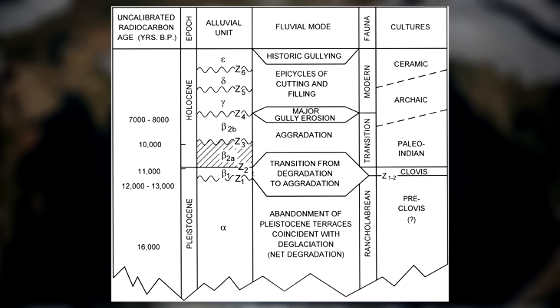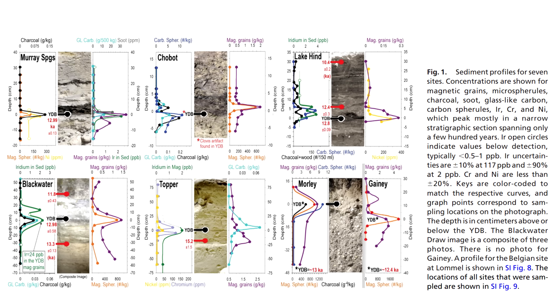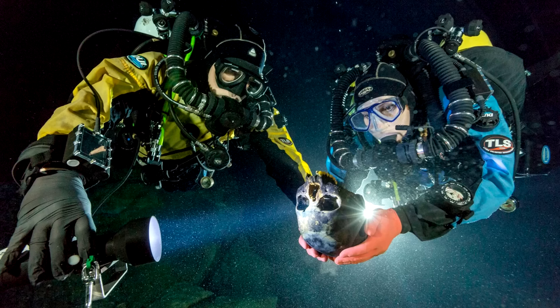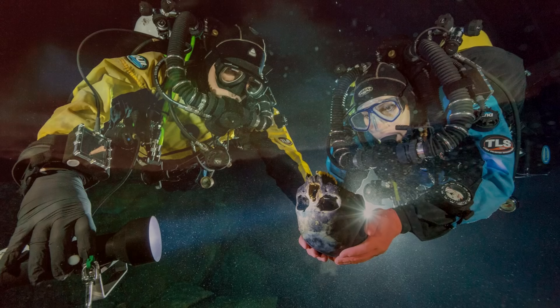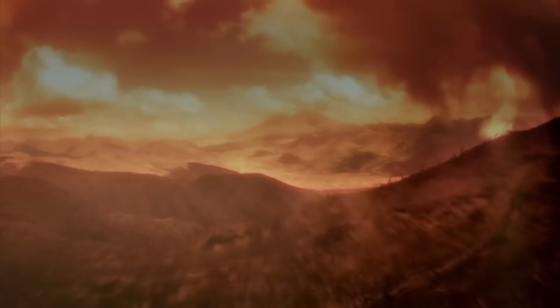The YDB layer also corresponds with the end of the Clovis age, and is commonly associated with other features such as an overlying black mat — a thin, dark, carbon-rich sedimentary layer — as well as the youngest known Clovis archaeological material and megafaunal remains, and abundant charcoal that indicates massive biomass burning resulting from impact.